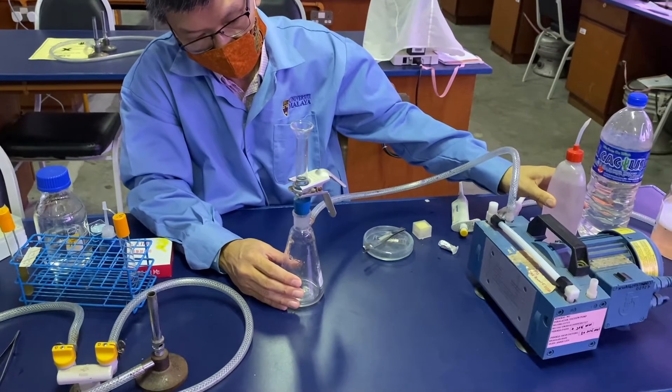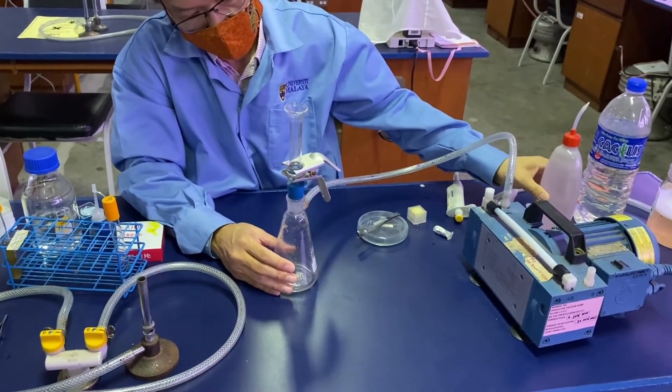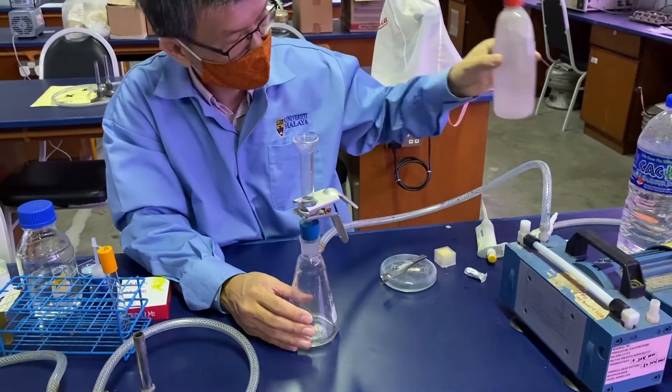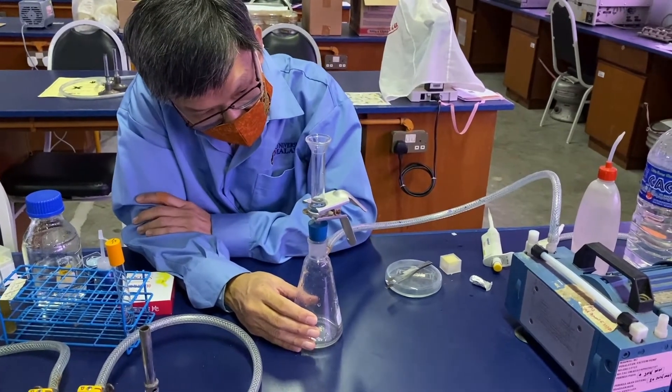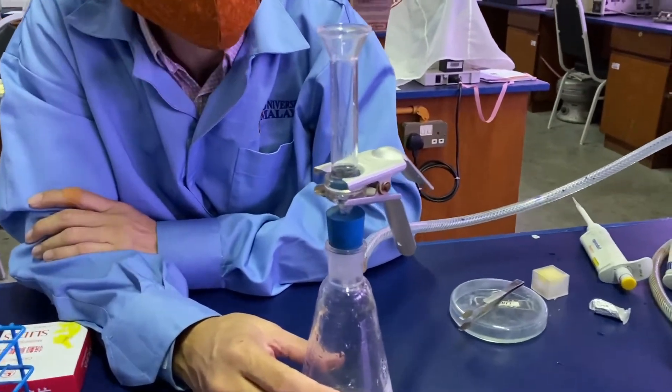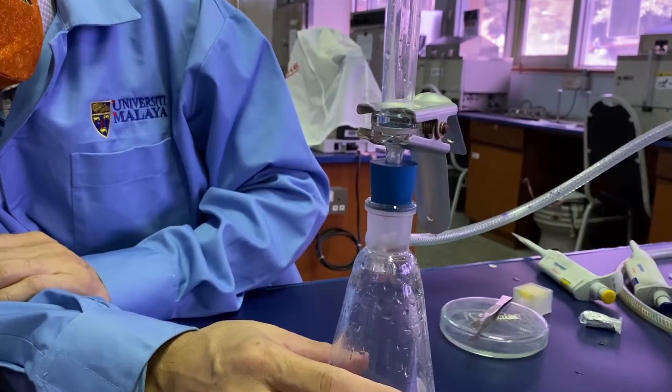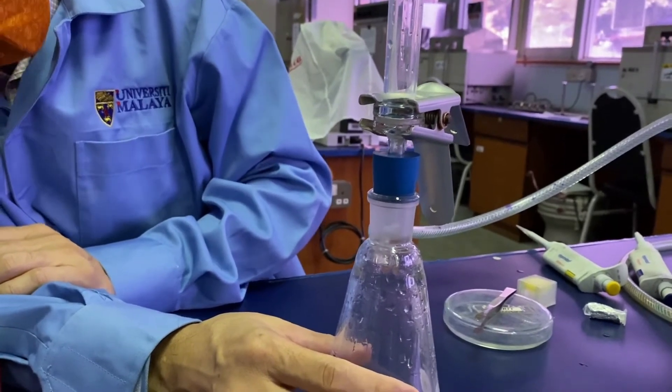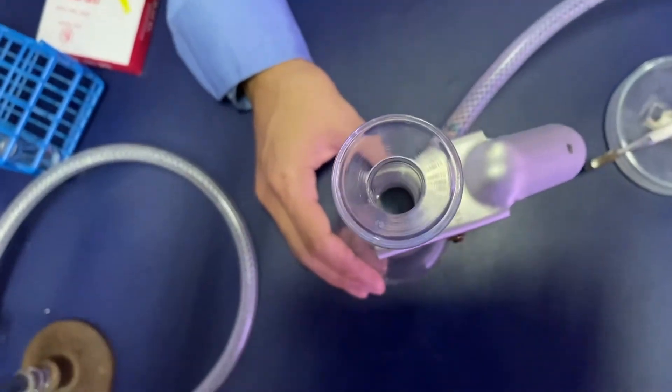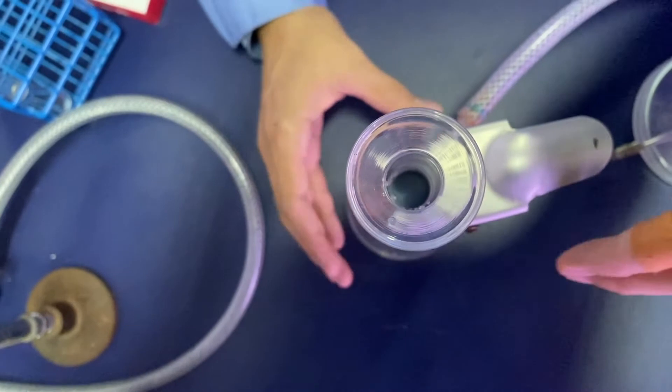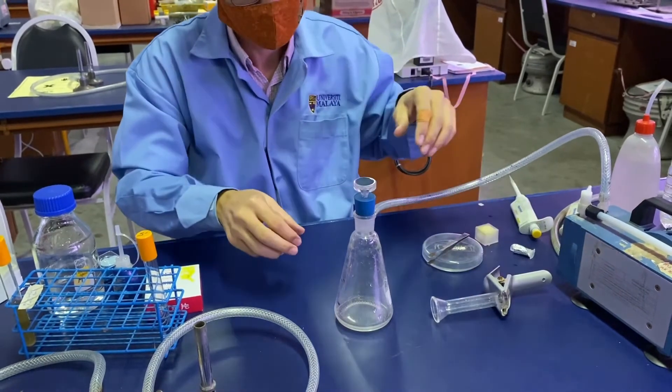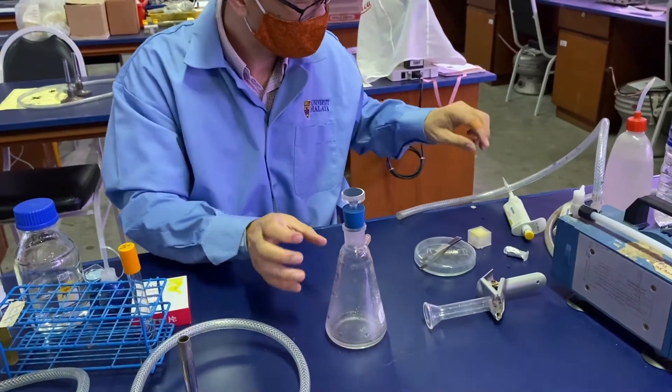As the sample is being filtered through, we will flush it with sterile distilled water in order to ensure better distribution of the bacteria. Once the filtration is complete you can switch off the vacuum pump and remove the filter funnel and release the vacuum pressure.